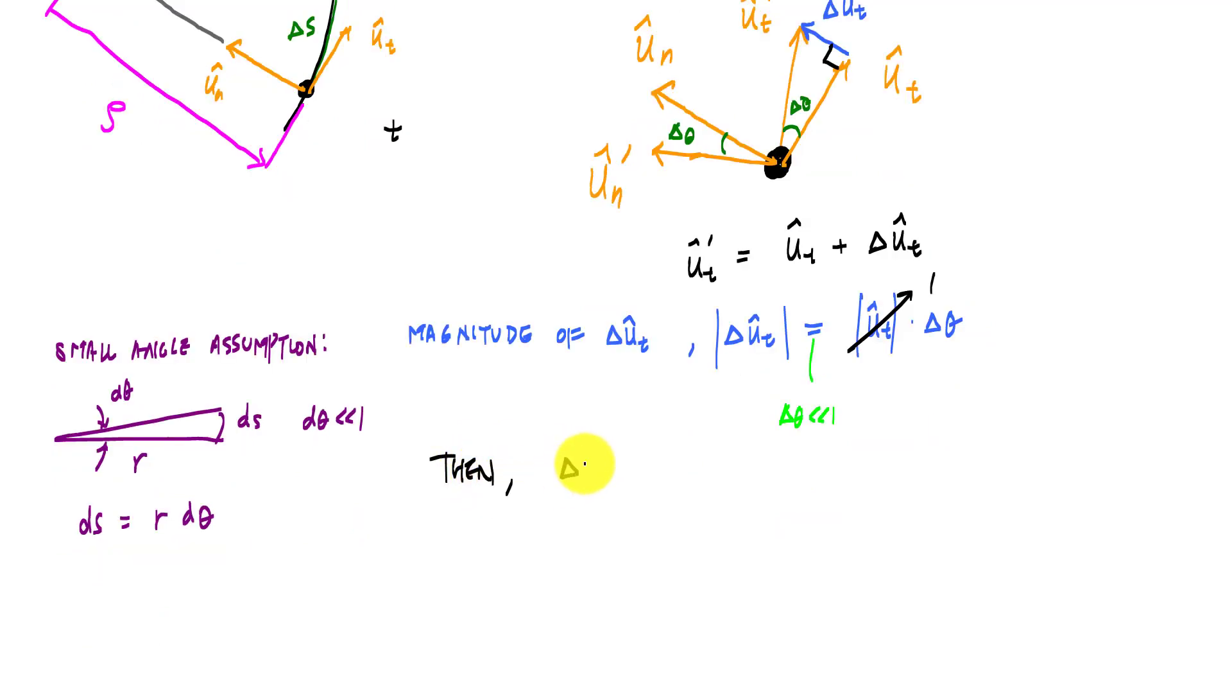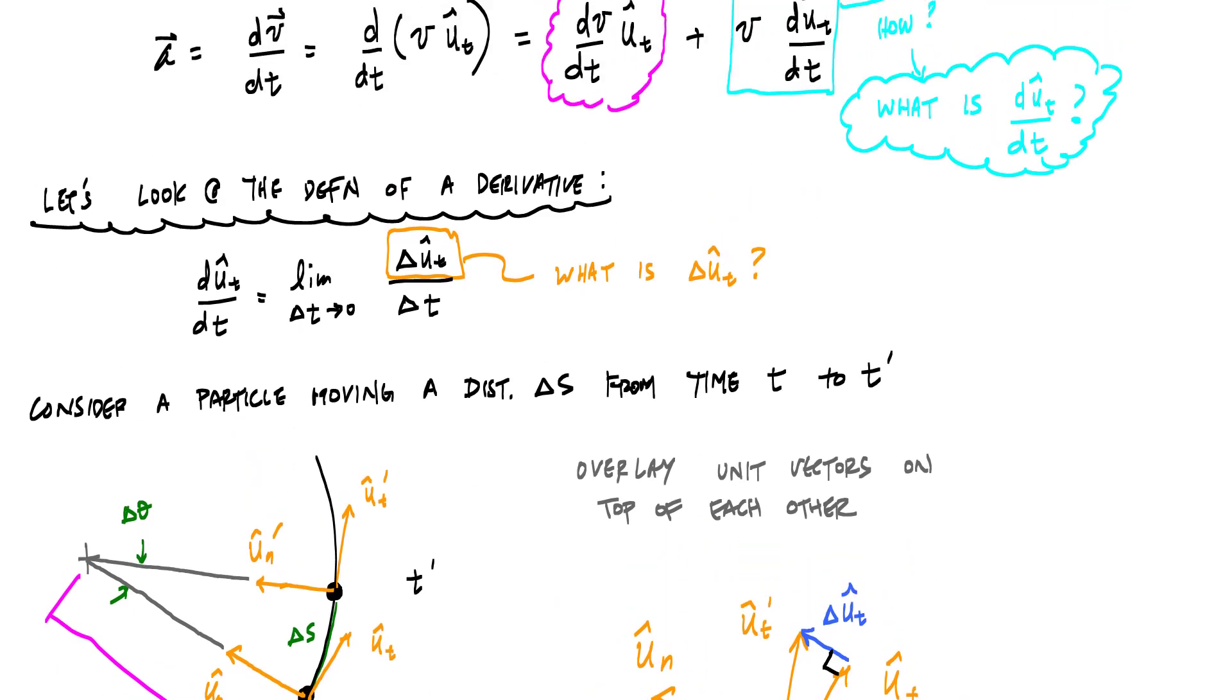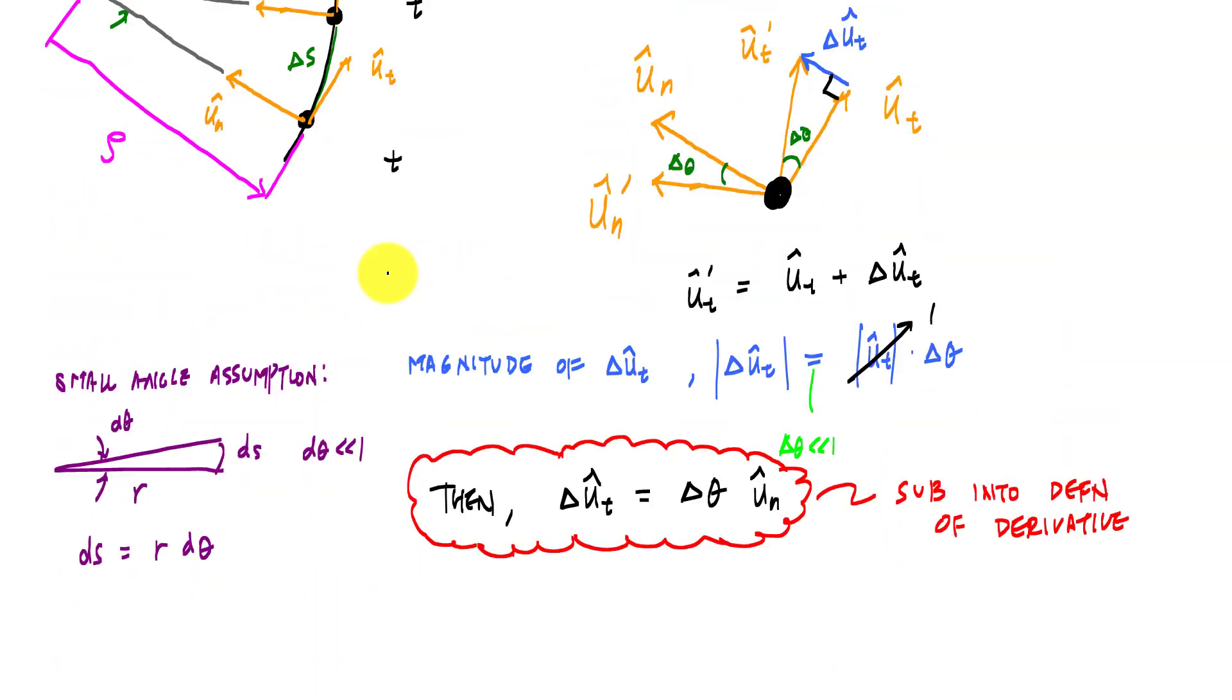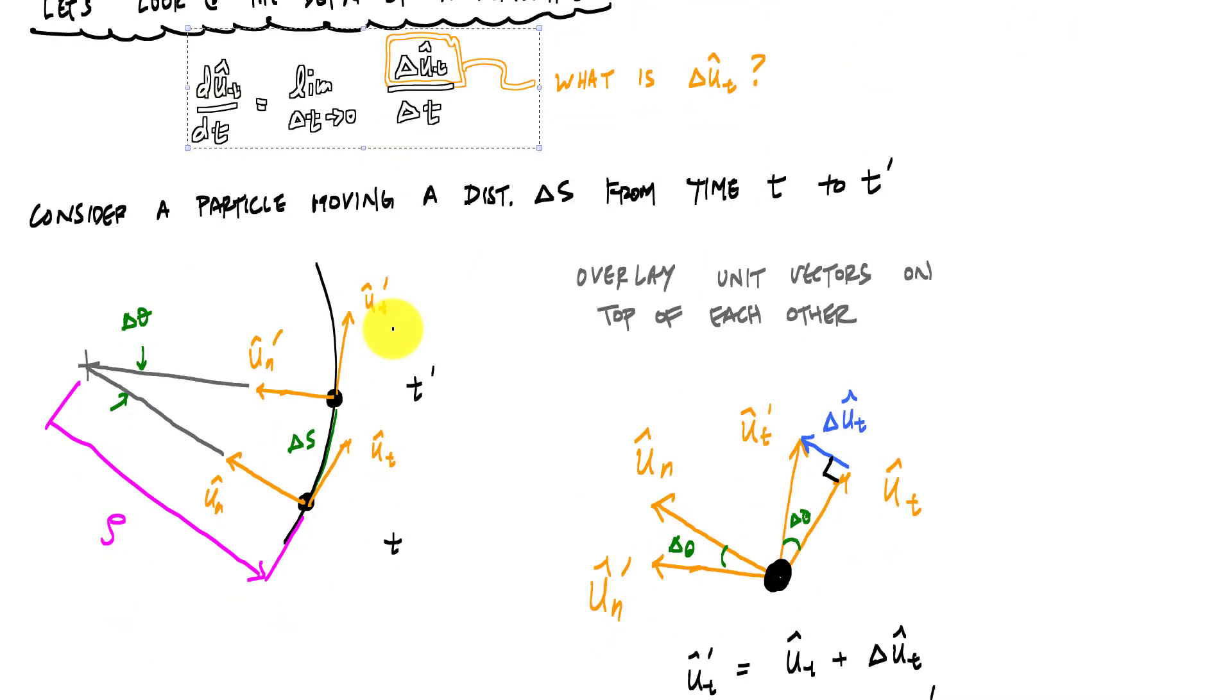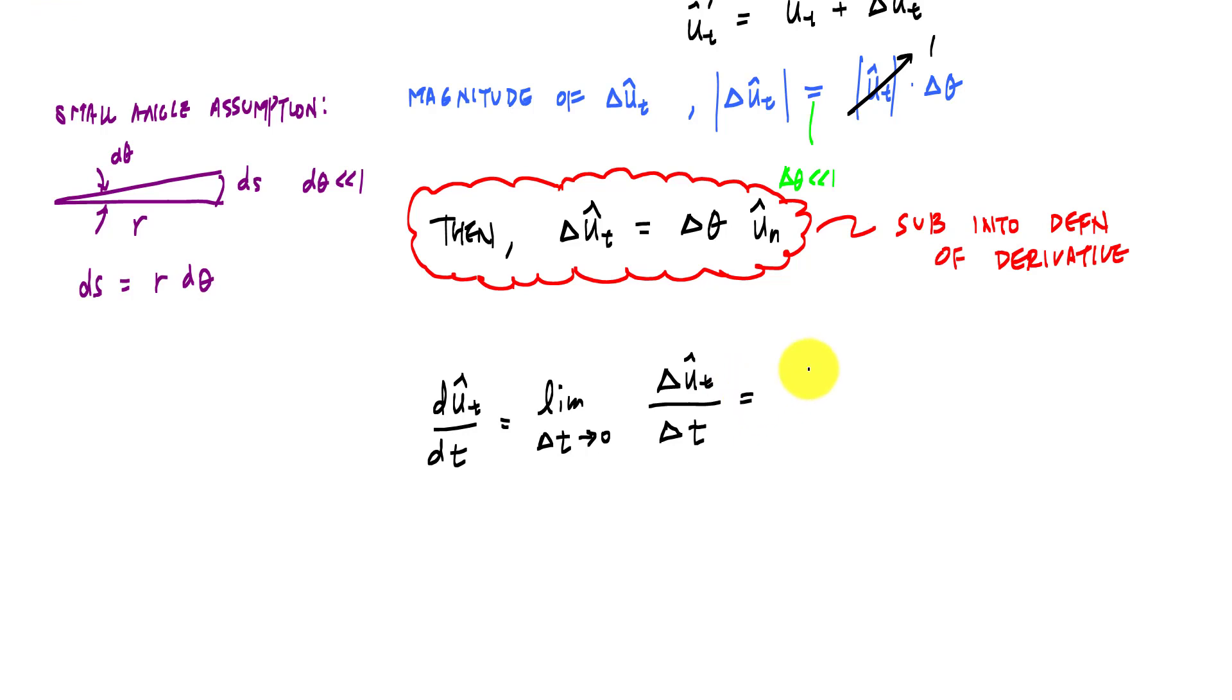Based on all this, then that tells us delta u_t hat can be written as magnitude and direction. So here the magnitude of delta u_t hat is delta theta. And because it's 90 degrees to the tangential component, it is in the u_n hat direction. And so I'm going to put a bubble around that. We're able to relate this delta u_t to the normal direction. And I'm going to take this and substitute that into the definition of the derivative. If I substitute this definition of delta u_t, then now my limit as delta t goes to zero is delta theta u_n hat over delta t.